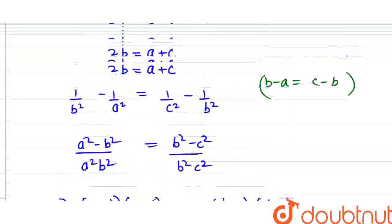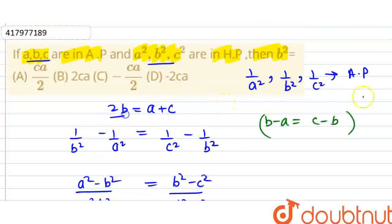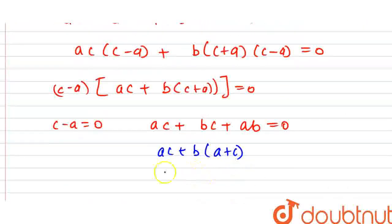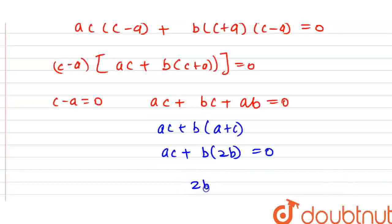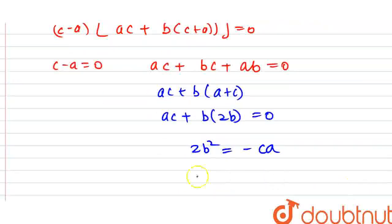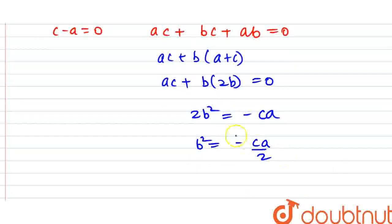If A plus C equals 2B, then we should have A C plus B into 2B equals zero. So 2B squared equals minus C A. Here is the value of B squared, which is minus C A upon 2.